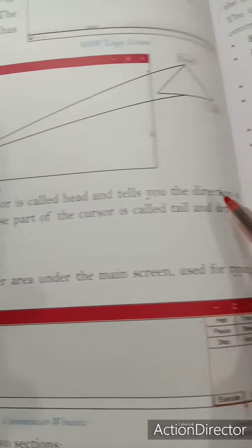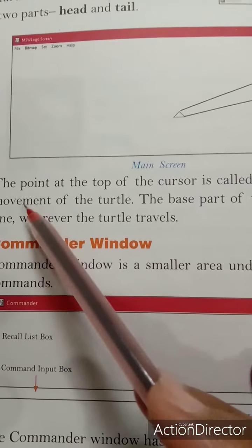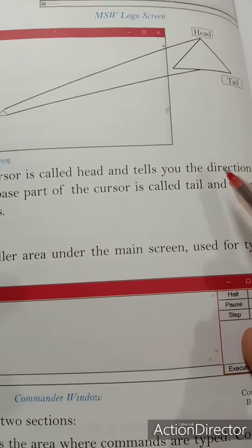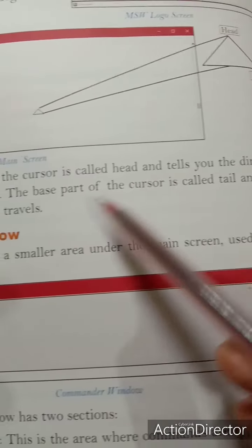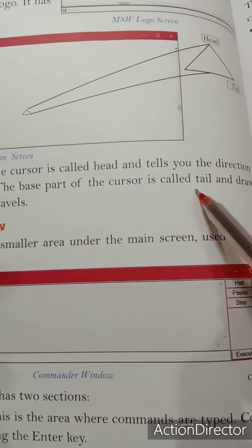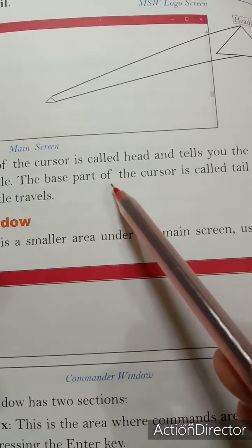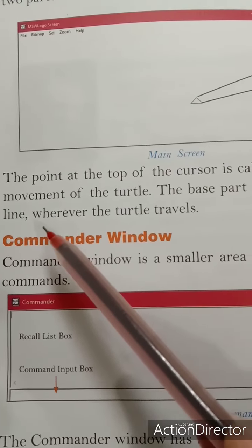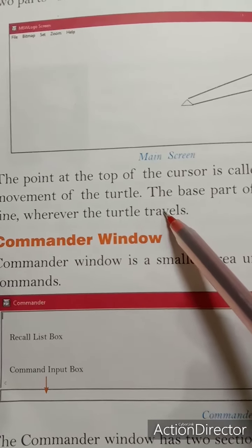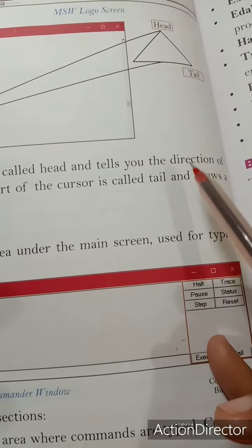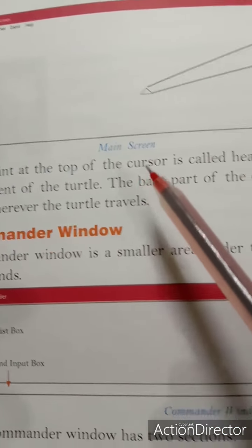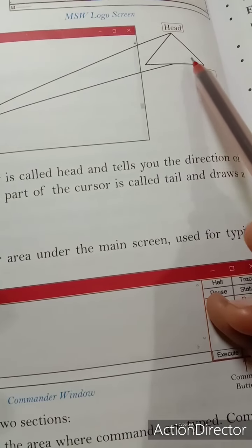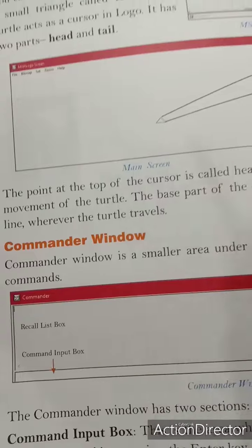The head tells you the direction of movement of the turtle. Turtle की जो भी गति होती है, उसके हिलने की जो direction — दिशा — आपको head बताता है। The base part of the cursor is called tail. जहाँ जहाँ आपका turtle travel करता है, वहाँ नीचे का जो part होता है वो line draw करता रहता है। आपका head जिस direction में होगा उससे पता चलेगा कि कौन से side line draw होगी।